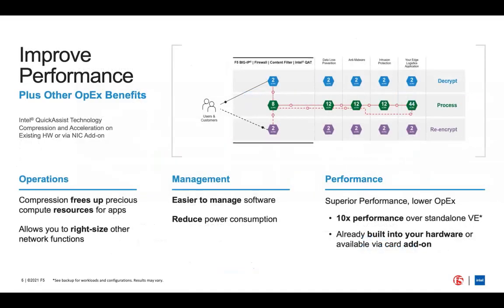This combination has so many benefits for your edge applications and operations: less hardware and specialized hardware at the edge, simplified management and maintenance, reduced power and space needs. You can look at all the other functions — your gateways, intrusion prevention, firewalls — and right-size them to do their job, gaining even more resources and budget. The performance you expect from purpose-built, without the cost.